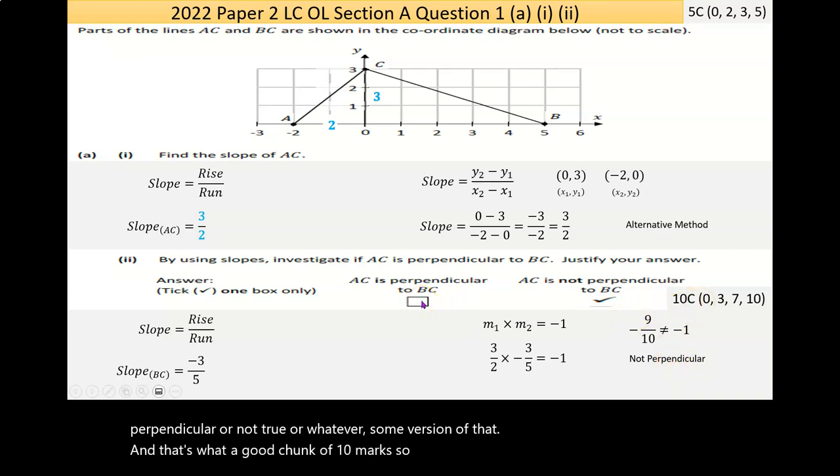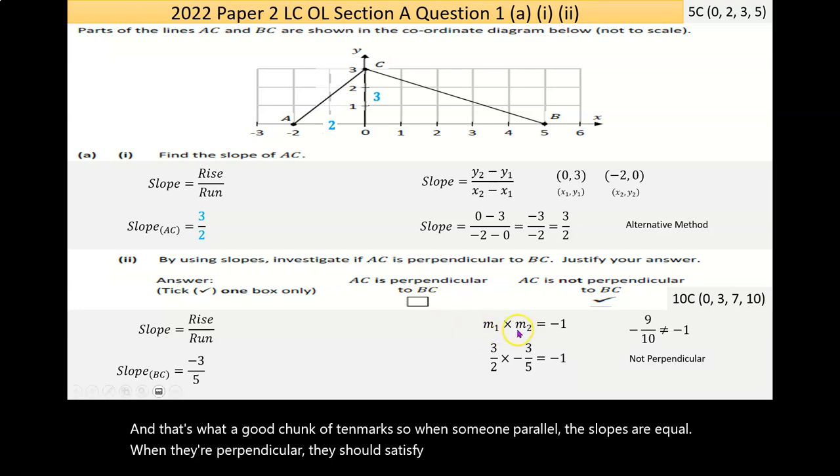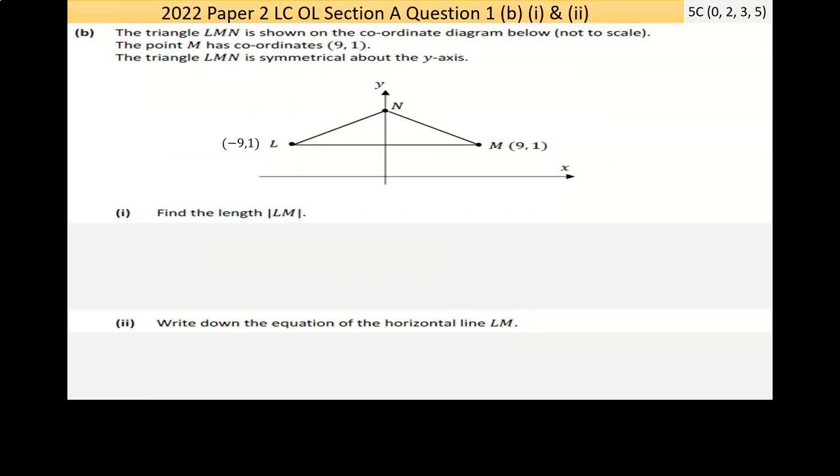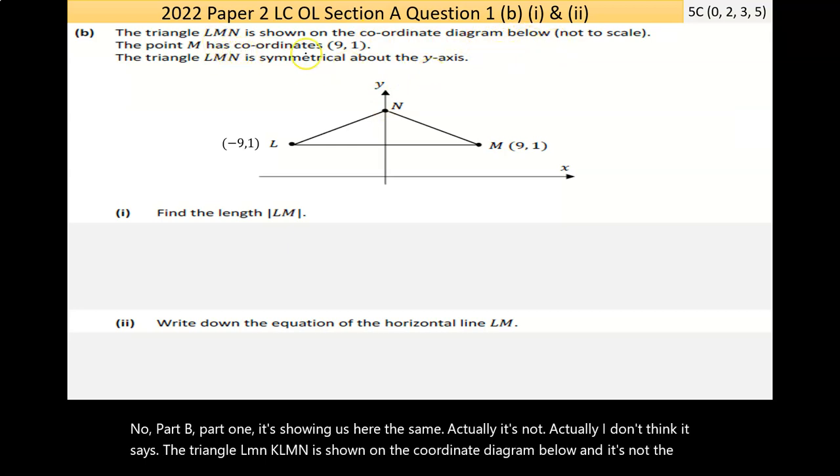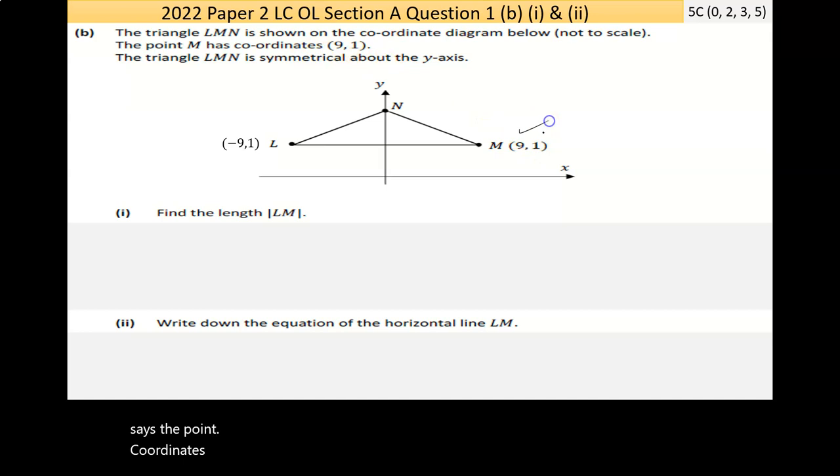Now, part B, part one. It's showing us here the triangle LMN is shown on the coordinate diagram below, and it's not to scale. It says the point M has coordinates nine, one, and the triangle LMN is symmetrical about the y-axis. So that means that it's the same on both sides. So I've put in here the minus nine, one.